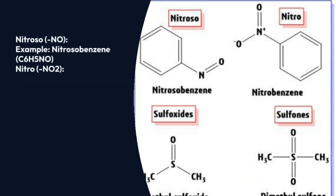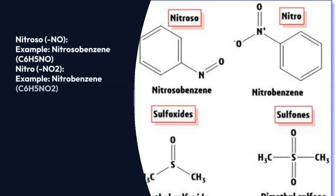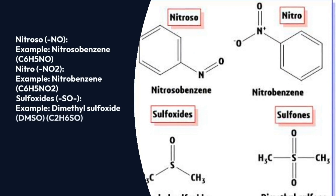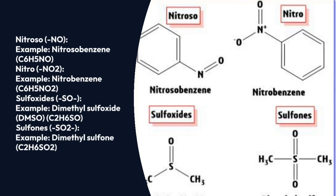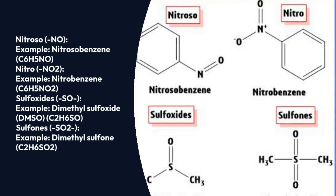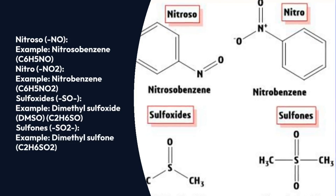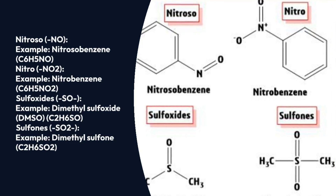The next category includes nitroso compounds, nitro compounds, sulfoxides, and sulfones. For nitroso compounds, the example is nitrosobenzene. For nitro compounds, the example is nitrobenzene. For sulfoxide, the example is dimethyl sulfoxide. For sulfone, the example is dimethyl sulfone.